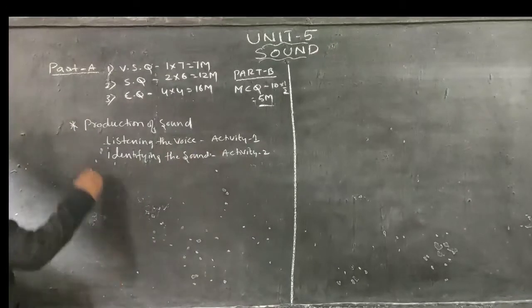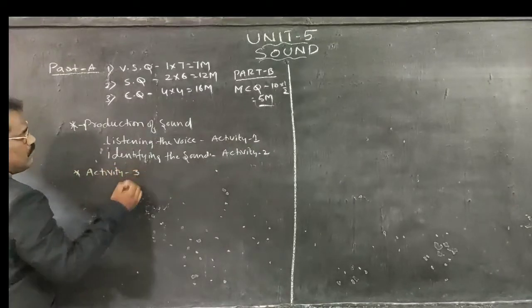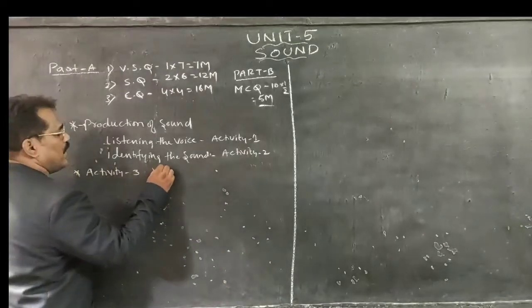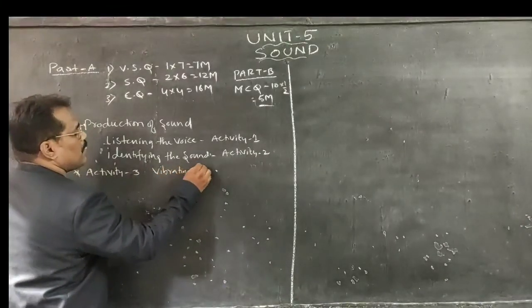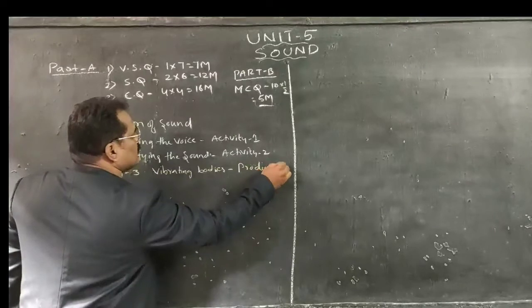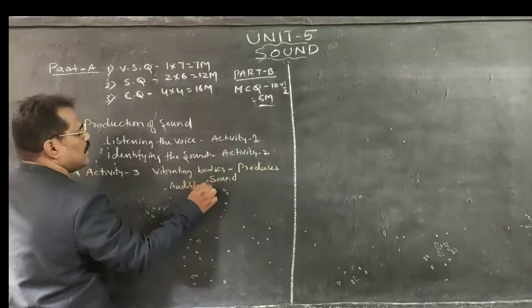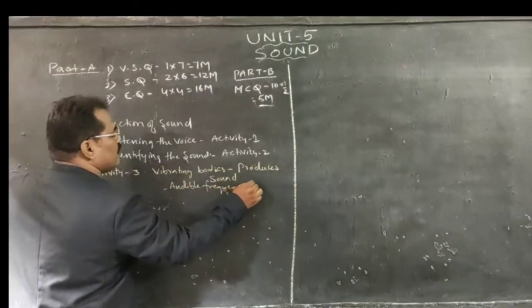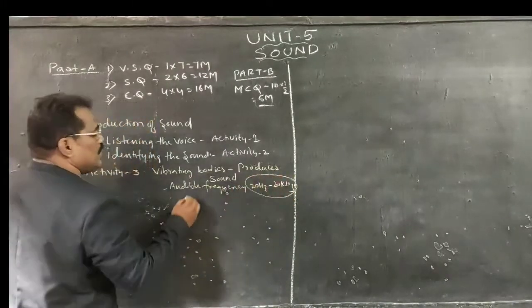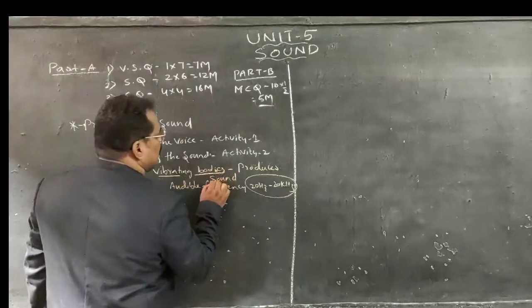Activity 3 gives information about vibrating bodies producing sound. We have clearly studied that not all vibrating bodies produce sound — they must have an audible frequency range. Within that particular frequency range of 20 Hz to 20 kHz, if a body is vibrating within this region, that vibrating body can be heard.